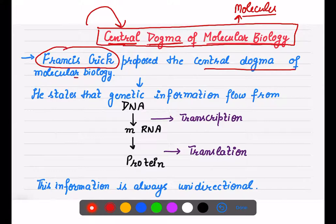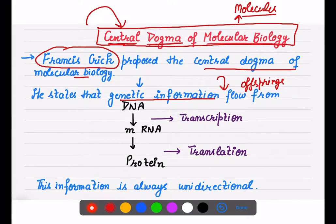Francis Crick said that genetic information — the characters that come from parents to offspring — always flows from DNA. This much is clear to us: genetic information flow starts from DNA.